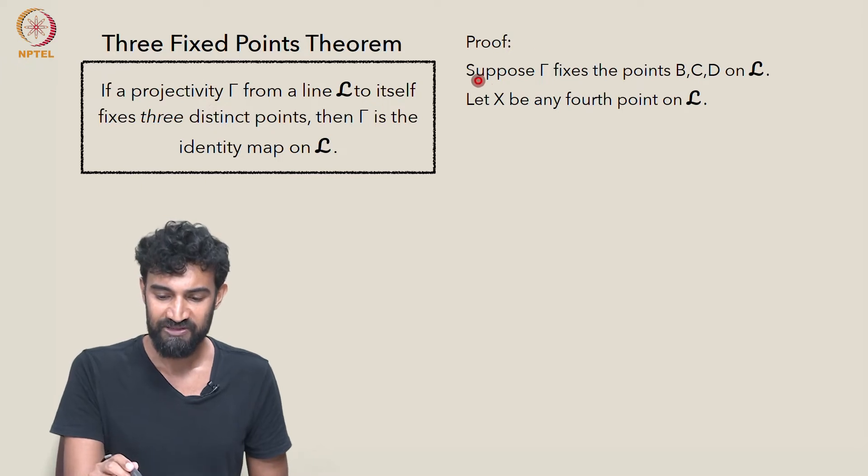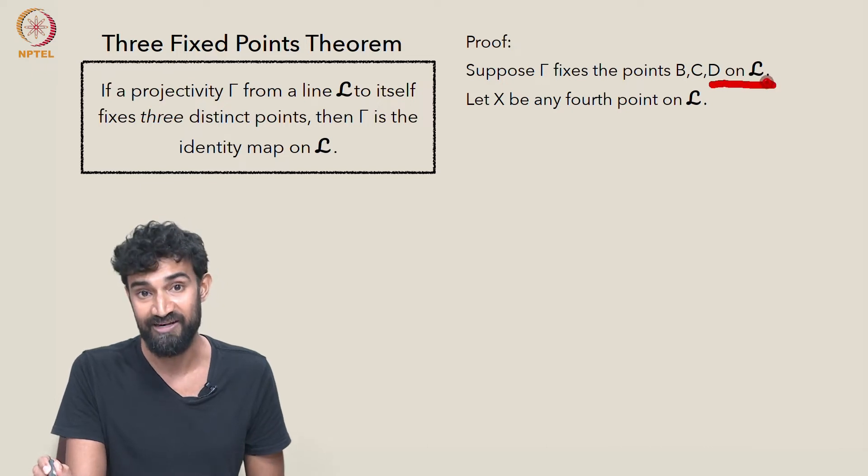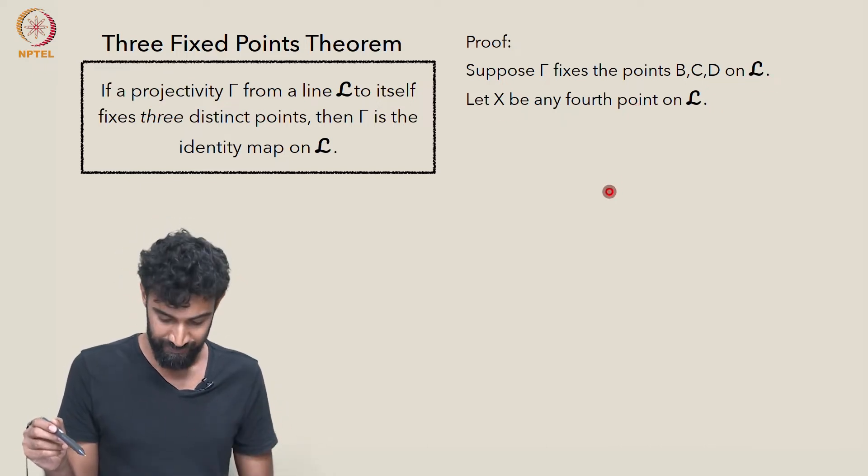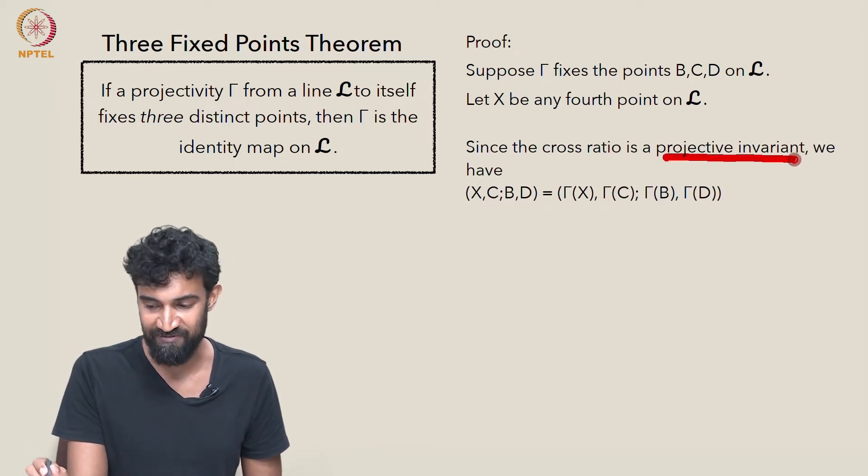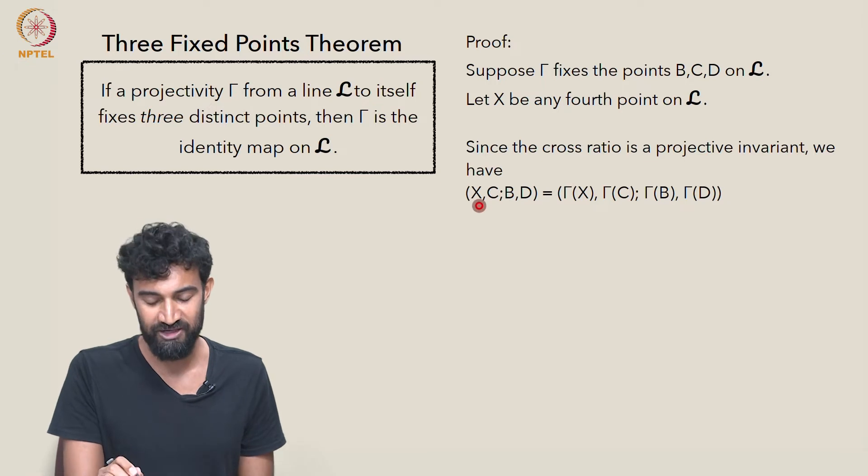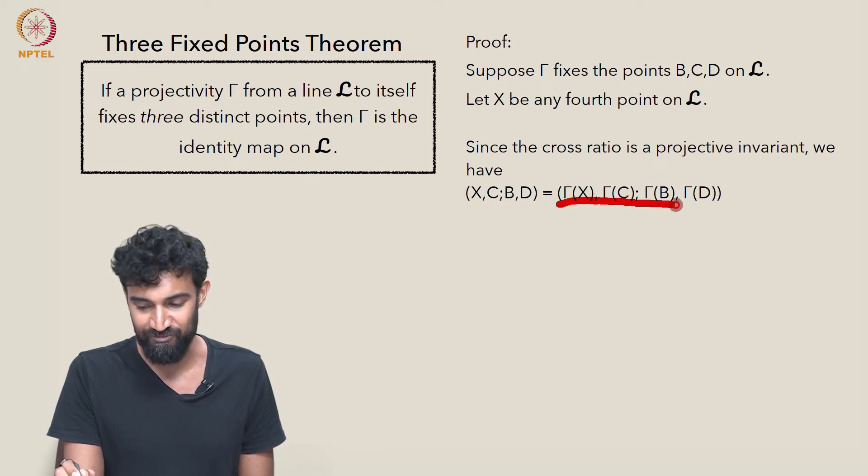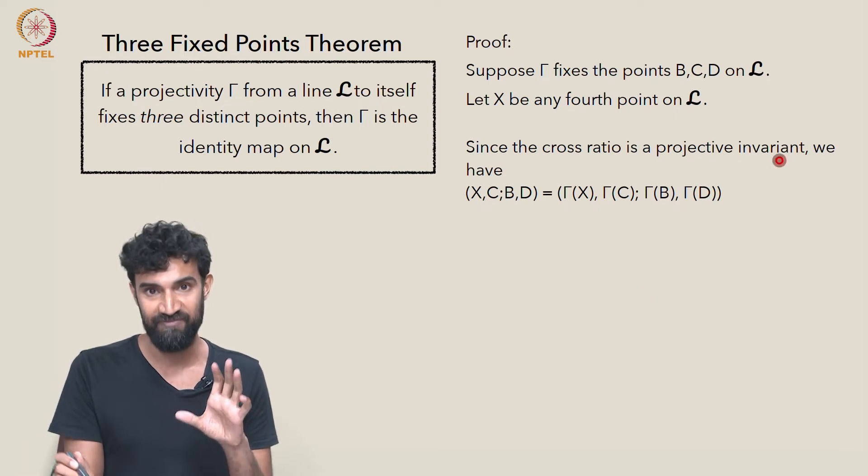So let's suppose that gamma fixes the points B, C, and D on the line L. And let's let X be any fourth point on L. Since the cross-ratio is a projective invariant, we have that the cross-ratio X, C, B, D is equal to the cross-ratio gamma of X, gamma of C, gamma of B, gamma of D. That's what it means to be a projective invariant.